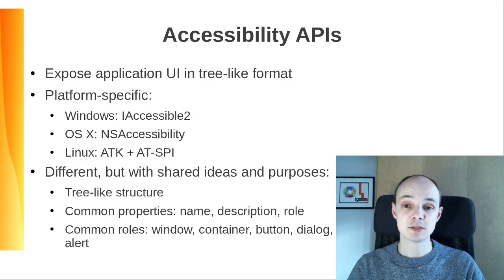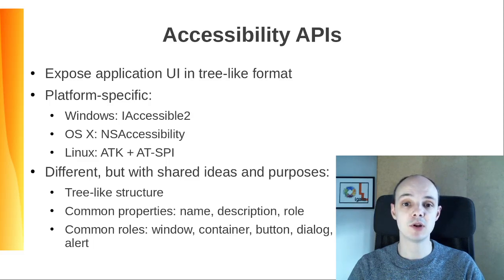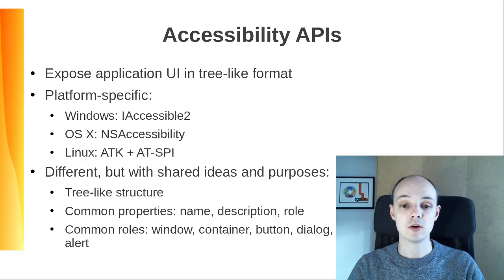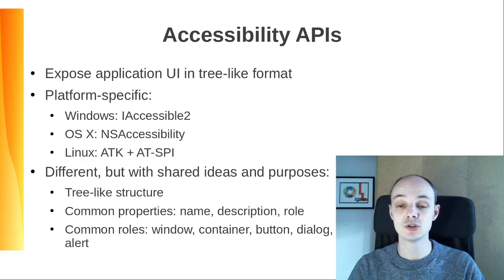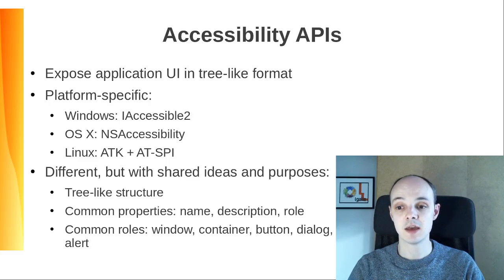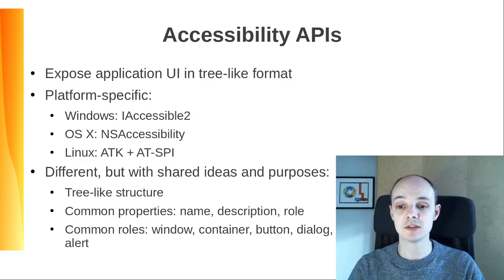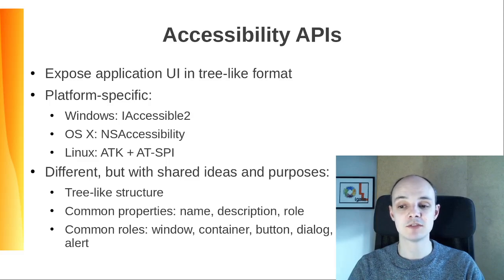These APIs expose the application UI in a tree-like format for ATs to consult and even manipulate. They are platform-specific. On Windows, it's called iAccessible2. On OSX, it's called NSAccessibility. On Linux, for historical reasons, there are two APIs: one for applications, ATK, and the other one for ATs, ATSPI. All these APIs are different but with shared ideas and purposes. They take ideas from each other as well as from other accessibility systems like the one in Java.